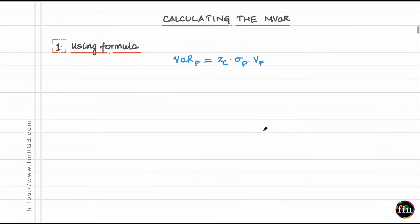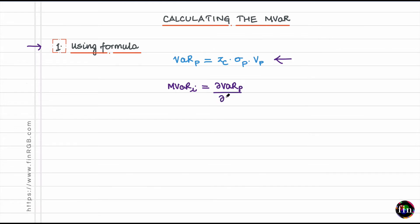Let's move on to the computation of marginal VAR. Using a simple formula, I assume that the VAR of the overall portfolio is given by: the critical Z value, times the portfolio standard deviation σ_P, times the overall dollar value of the portfolio. Employing the definition of marginal VAR and doing the math, the marginal VAR of the ith portfolio equals beta_i times the portfolio VAR expressed in percentage terms. Note that marginal VAR is a dimensionless number — the dollar values in the numerator and denominator cancel out.